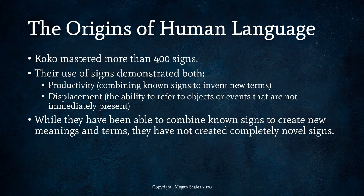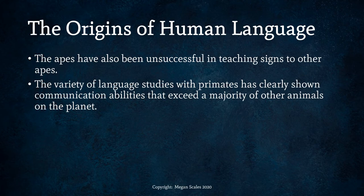Productivity was combining known signs to invent new terms. Displacement was the ability to refer to objects or events that are not immediately present. While the great apes in the study were able to combine known signs to create new meanings and terms, they did not create completely new signs. The apes were also unsuccessful in teaching signs to other apes. Remember, culture is shared and learned — if it doesn't spread within a community or get passed down to the next generation, it can't really be culture.